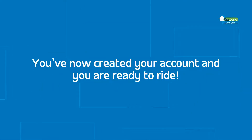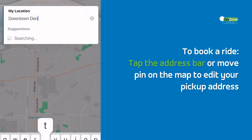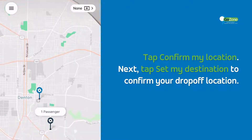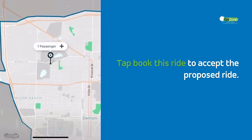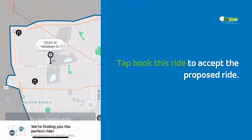You've now created your account and you're ready to ride. To book a ride, tap the address bar or move the pin on the map to edit your pickup address. Tap Confirm My Location. Next, tap Set My Destination to confirm your drop-off location. Tap Book This Ride to accept the proposed ride.